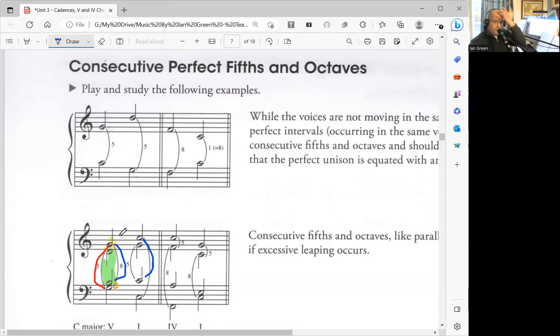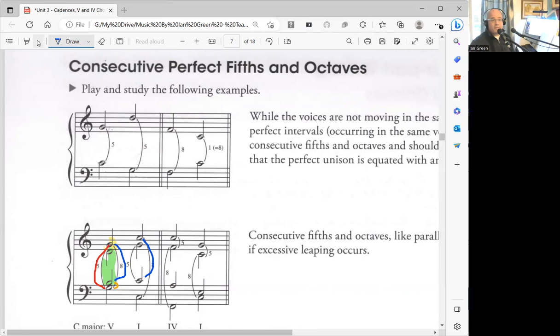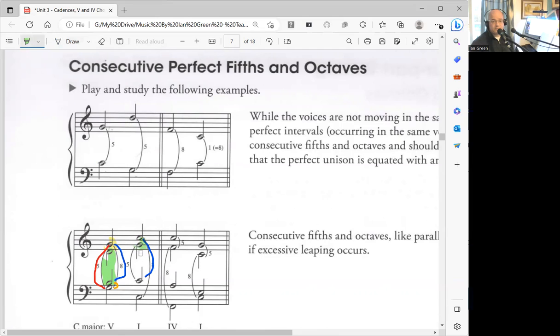The next one we could check is alto to tenor. So we go from here to here, B to D is a third, C to G is a fifth. So that's fine too. And also there's nice voice leading, there's a bit of a jump here, but that's all fine.